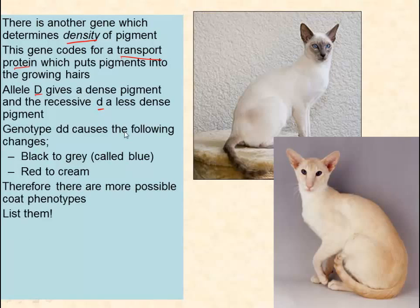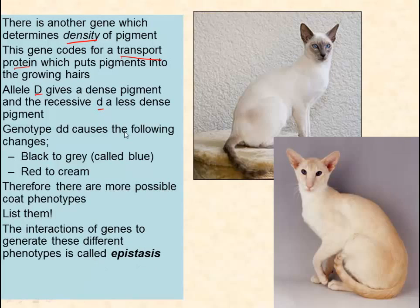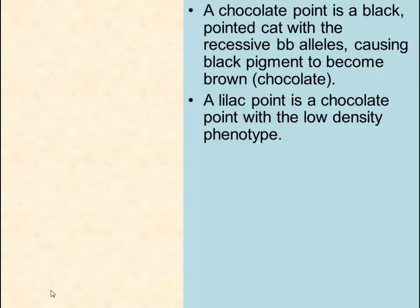So we have loads more phenotypes: red points, cream points, blue points, and so on. All these interactions are called epistasis to give these different phenotypes. A chocolate point is a black pointed cat with the recessive little b, little b alleles — so it's brown. Remember, big B for black and little b for brown; the browning gene. Because it's a cat, it's not brown, it's chocolate. And a lilac point is a chocolate point with the low density phenotype.